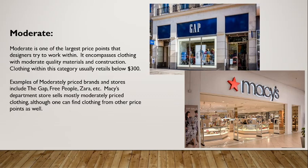Next, we have the moderate price point. Moderate is one of the largest price points that designers try to work within — it's sort of average. The most amount of people look within the moderate price point, especially when they start to look for quality clothing. It encompasses clothing with moderate quality materials and construction, and clothing within this category usually retails below $300. Examples of moderately priced brands and stores include the Gap, Free People, and Zara. Macy's department stores sells mostly moderately priced clothing, although they have a large selection that can range above and below moderate.